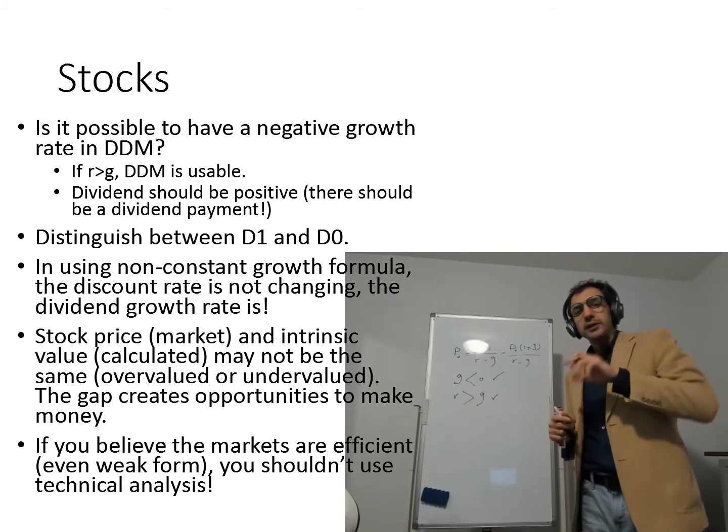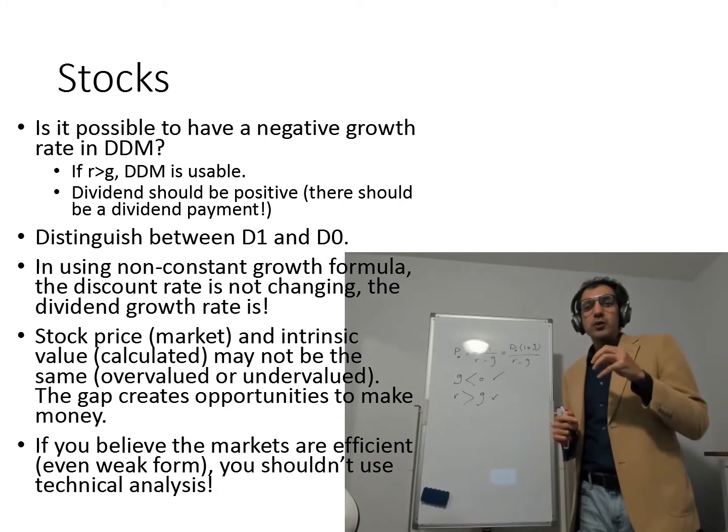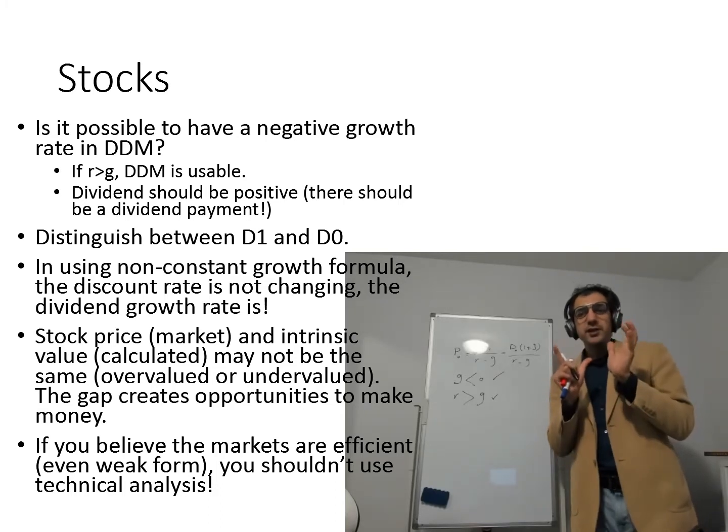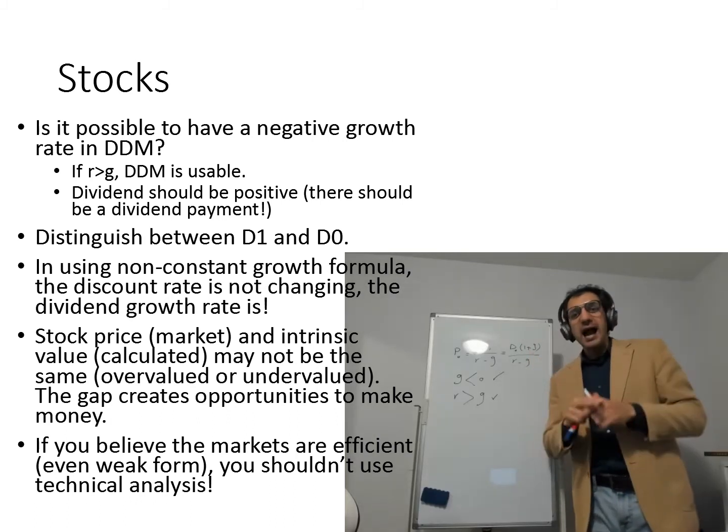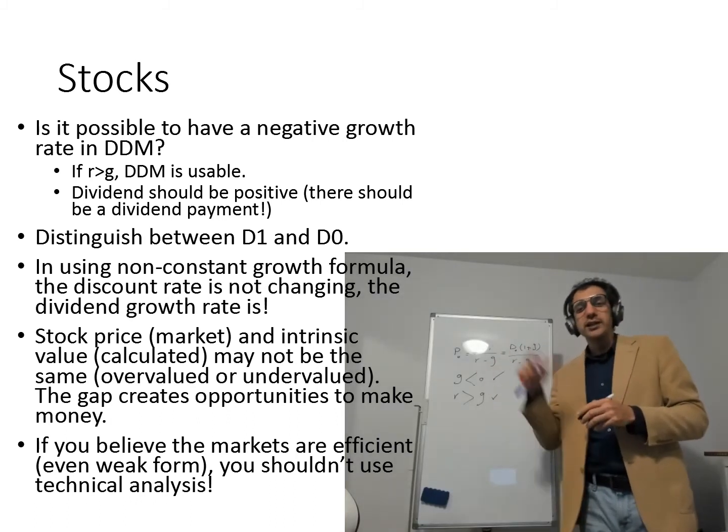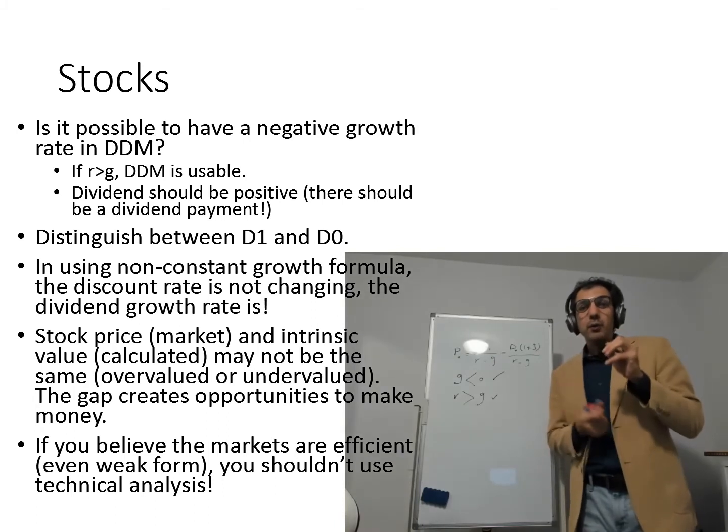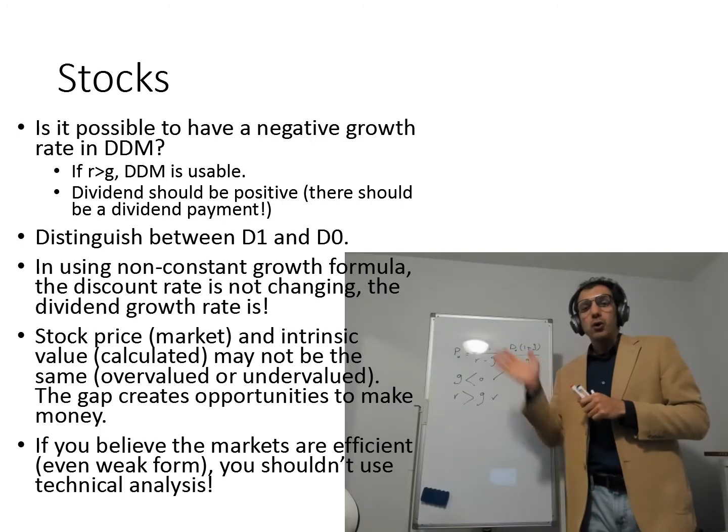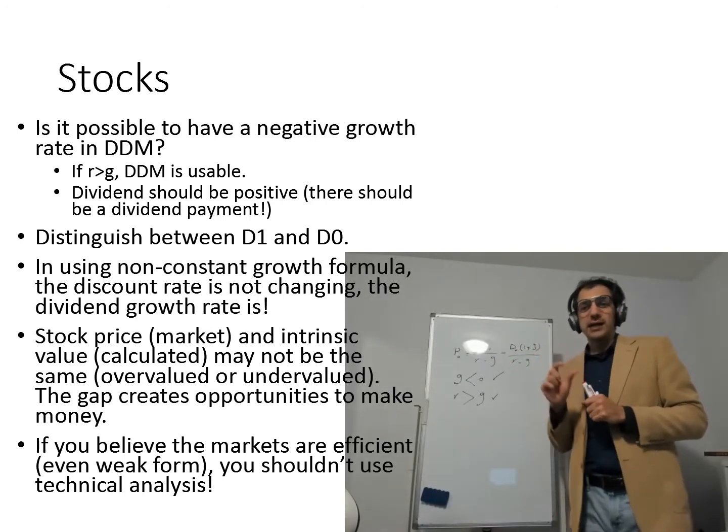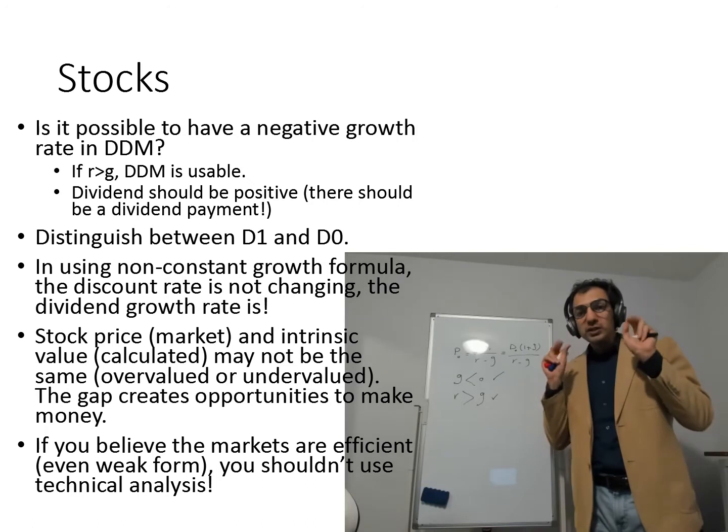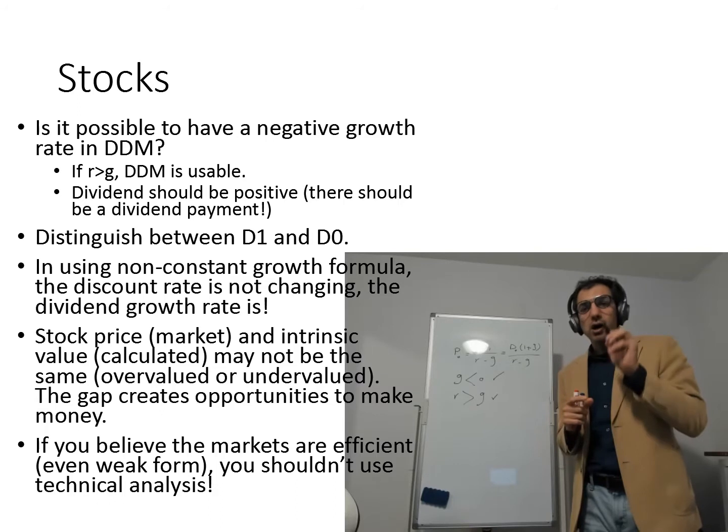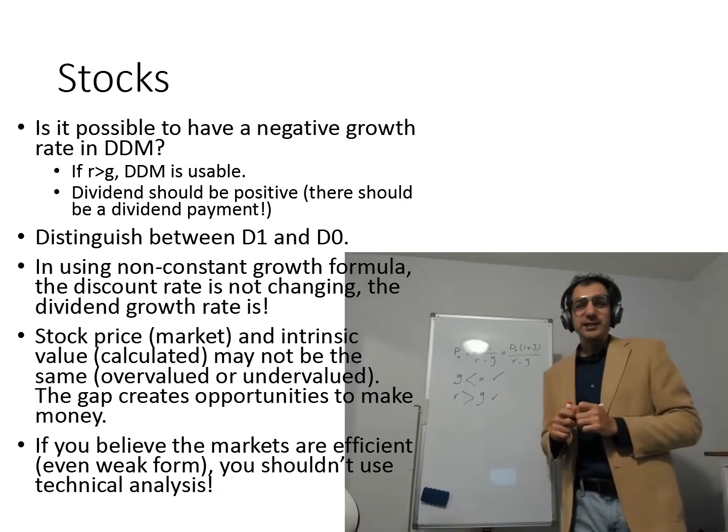We also talked about the specific version of the DDM in which we have non-constant growth rate. So in some specific years, the growth rate is super normal. After a few years, you are getting back to the normal growth rate. And remember, when you are going to find the present value of all these dividends, you are using the discount rate. So don't use the growth rate when you are discounting all these dividends. You have to use R, not the G or the super normal growth rate in this case.